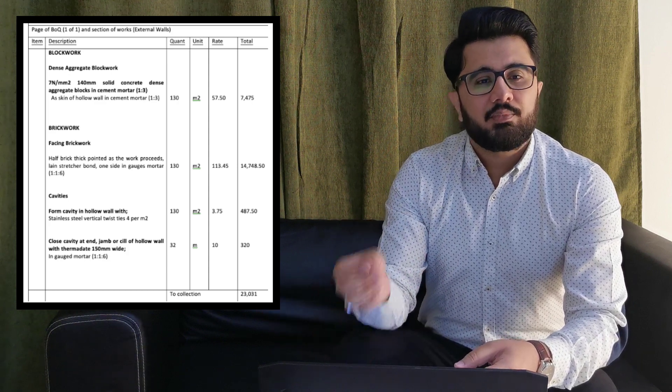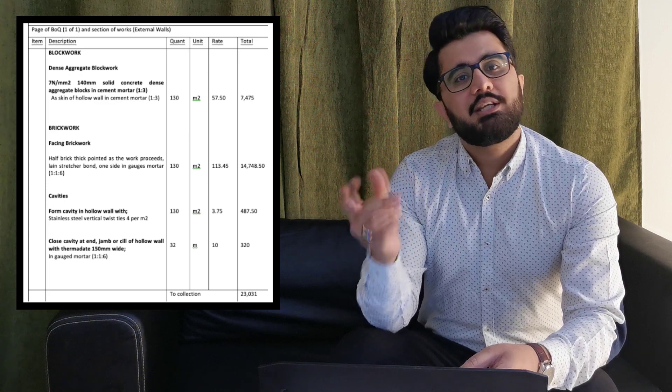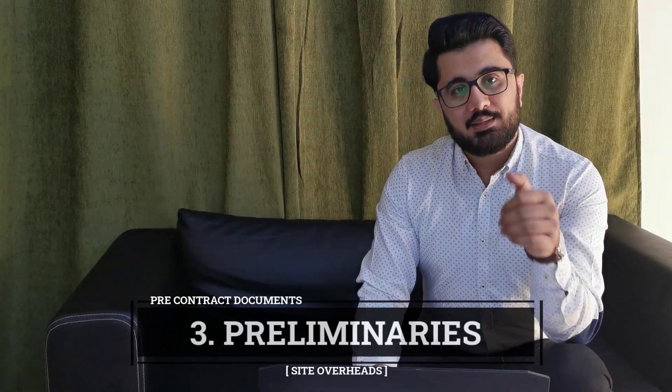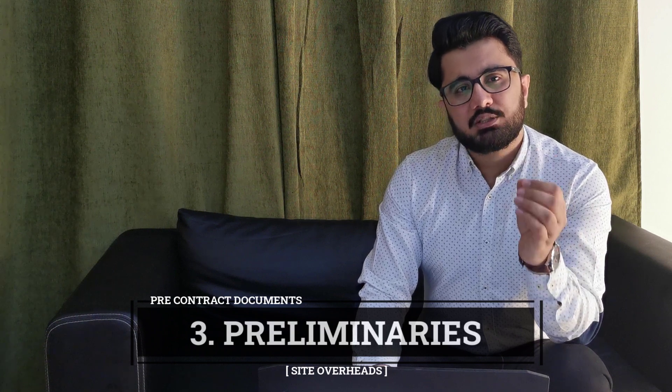The second document is the BOQ — the Bill of Quantities. This is the signature document of quantity surveyors, prepared according to the nature of the project by following standard rules. It includes listed items of work with their description, total quantities, unit rate per unit, and amount per item. The purpose of this document is to enable contractors to prepare tenders more efficiently and accurately.